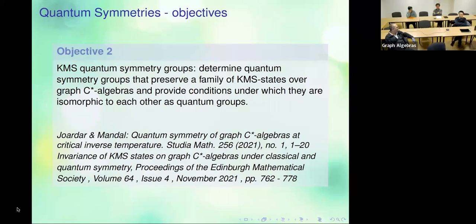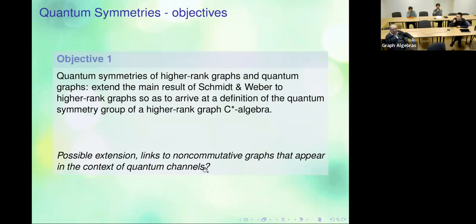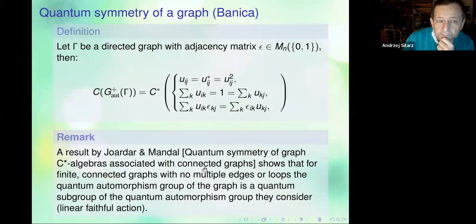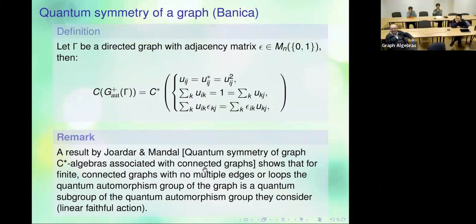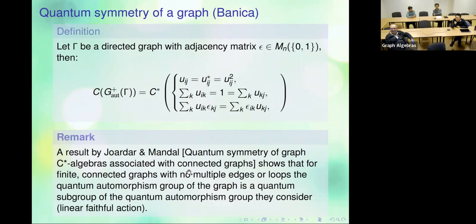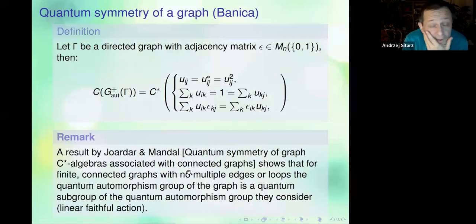An audience question: do you have any suggestion for a definition of a quantum group action on a graph with multiple edges, something that should not be the original version of Banica? The speaker responds: if you imagine you have a graph and a graph C*-algebra, you look at the graph and say for such a graph I should have a compact quantum group acting. The question is about what definition of quantum symmetry to use for multiple edges. The speaker says it is an open question.